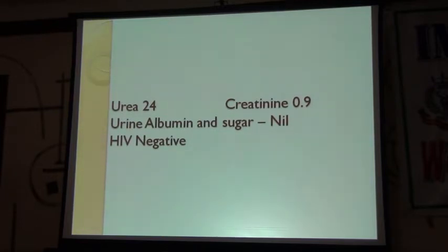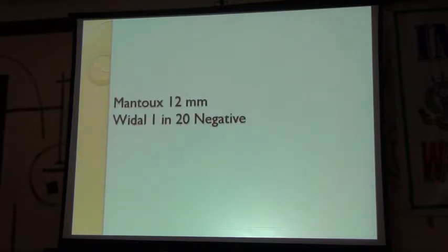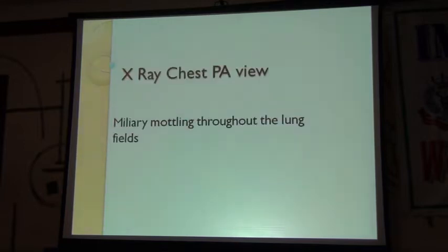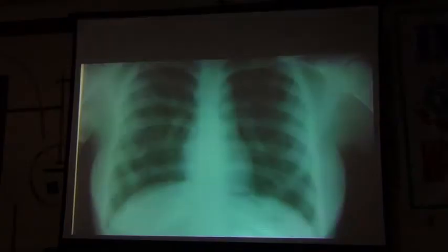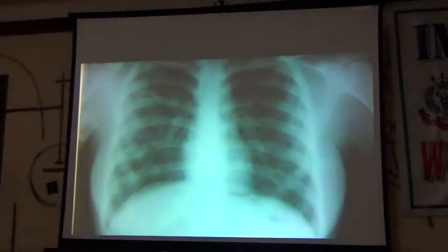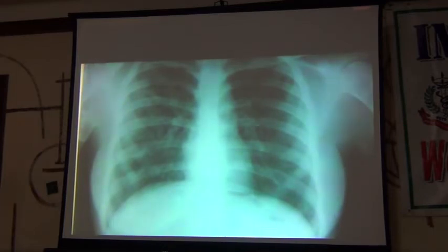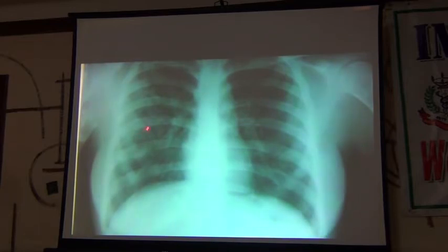Renal parameters normal, HBsAg negative. Mantoux 12 millimeters, Widal negative. X-ray chest showed miliary mottling throughout the lung fields. Here it is taken from the digitized image; there are many small mottlings visible.